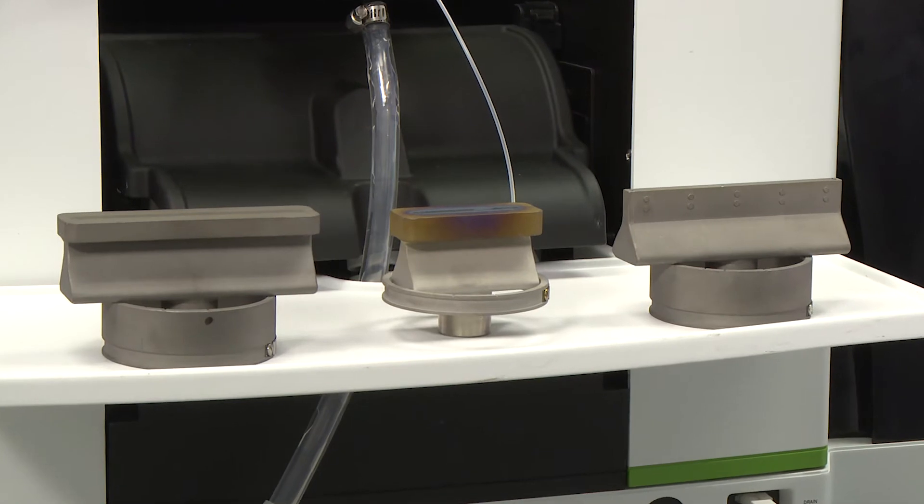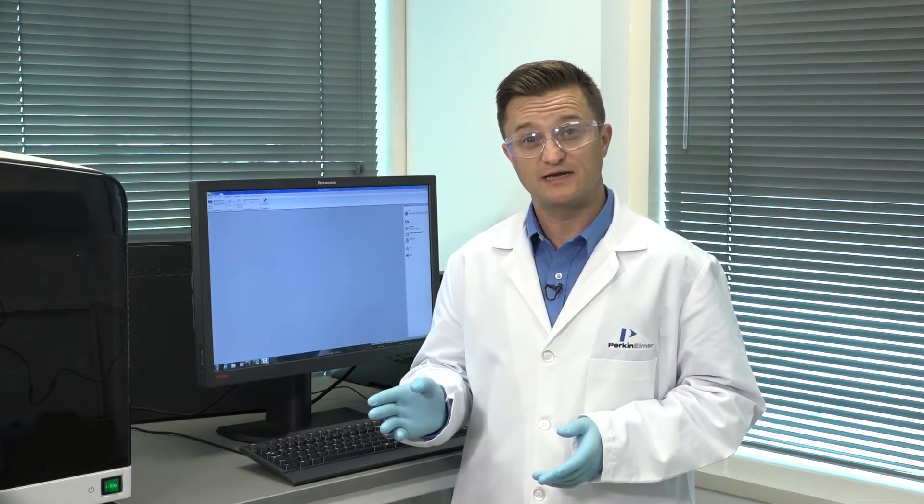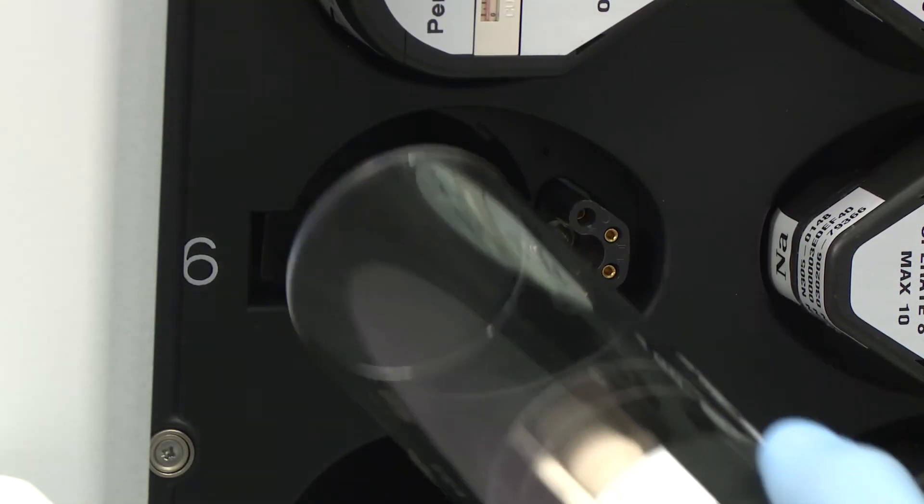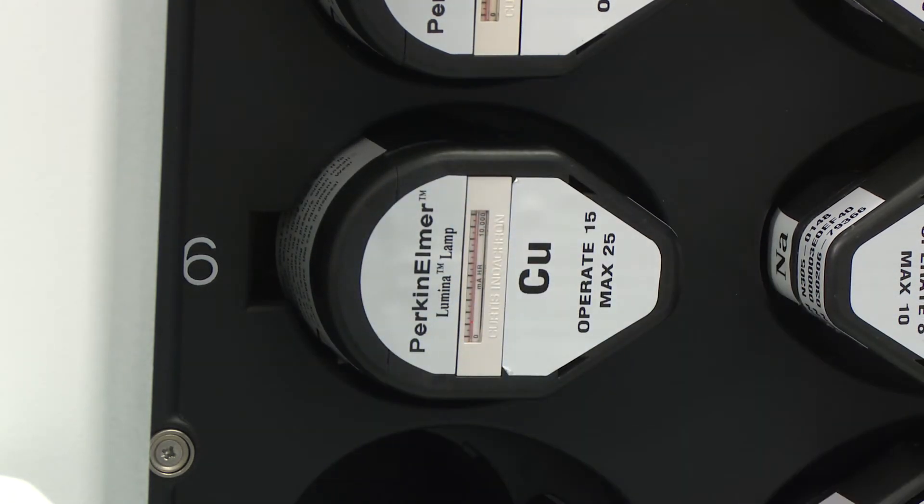First, make sure that the burner system is set up properly and that the correct burner head for your intended analysis is installed. The next step in aligning the burner is to install and align the correct lamp for the element you have selected in the method.